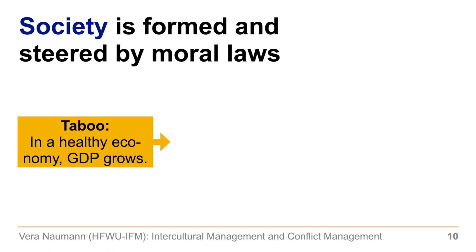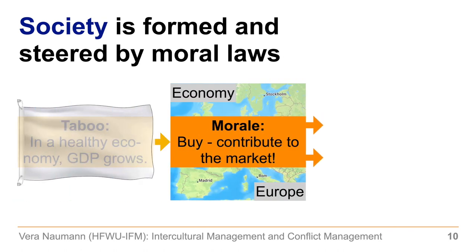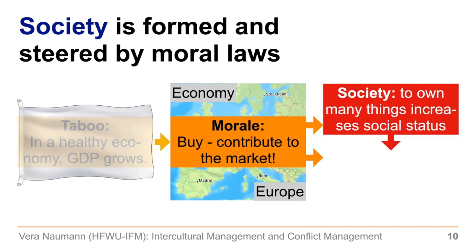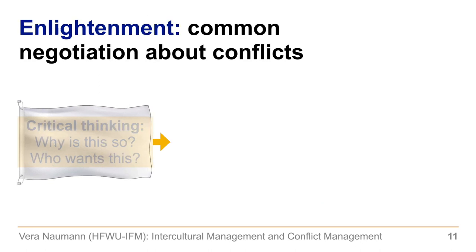Let's take another example. Society is formed and steered by moral laws. The taboo: in a healthy economy, GDP grows — GDP is something we shouldn't put into question. The morale that results, for instance in the economy in Europe, is: buy, contribute to the market. In society this means owning many things increases one's social status, and for the individual it means I must make money to buy more things. So we have a hidden taboo, but a visible morale — the morale of buying.